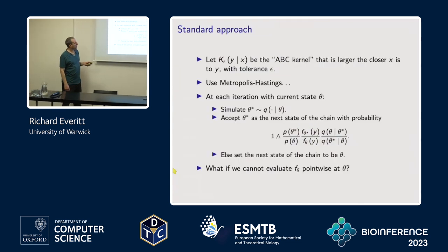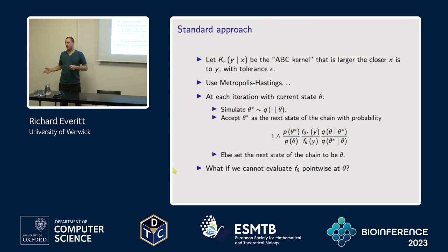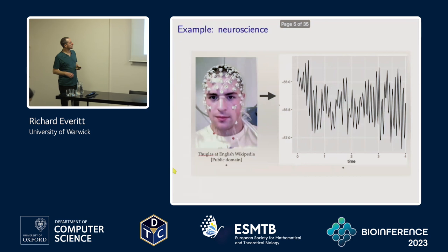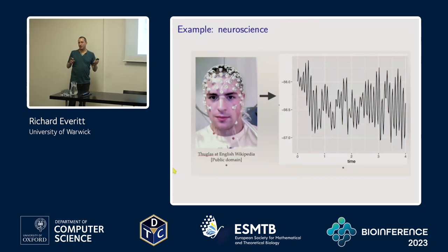The key point is: what happens if we can't evaluate this model point-wise at theta? This is, of course, the motivating setup for ABC.